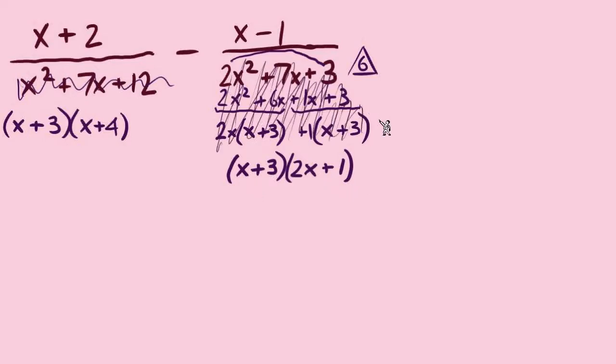So let's shade that out so we know to ignore that. It was just our work to factor that denominator. Now building the LCD, we're using each type of factor. We'll need 1 x plus 3, 1 x plus 4, and 1 2x plus 1.